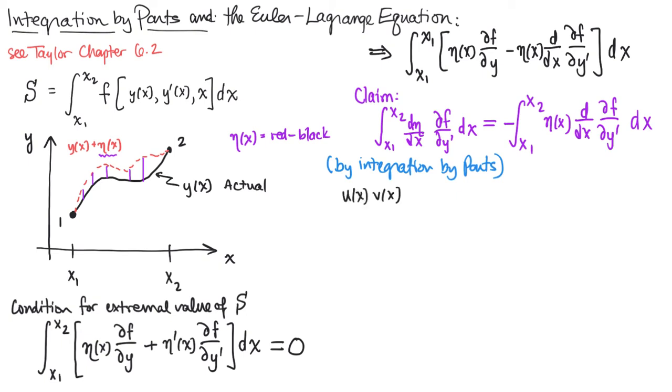So imagine we just have two functions of x, u of x and v of x, and we decide to take the derivative of that product with respect to x. We know we're going to get a u prime v plus a u v prime by the product rule of derivatives.